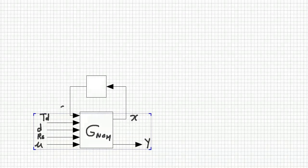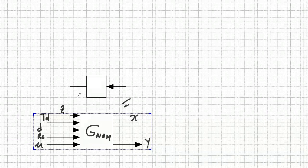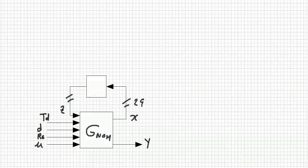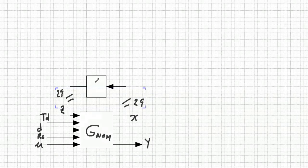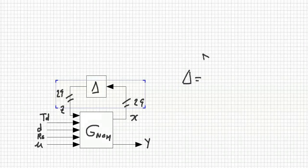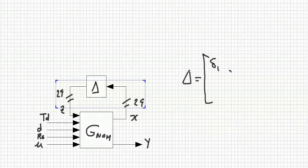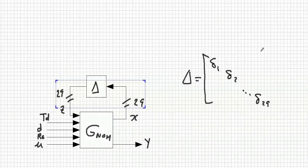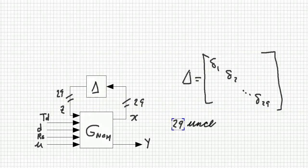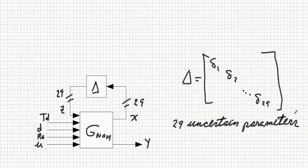X is the input to the structure disturbance, and we have 29 disturbances. Therefore, X is 29 component vectors, the same as Z, and delta is a diagonal matrix composed by all our structure uncertainties, 29 of them. So this way, considering all these 29 uncertainties, we have completed our structure uncertainty problem.